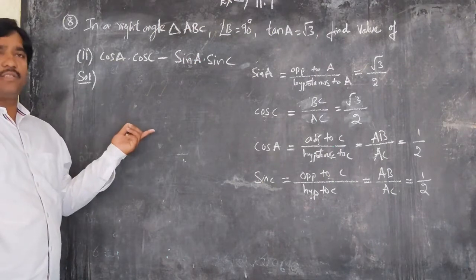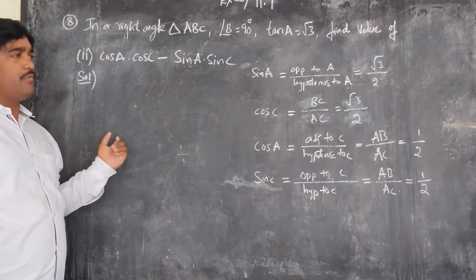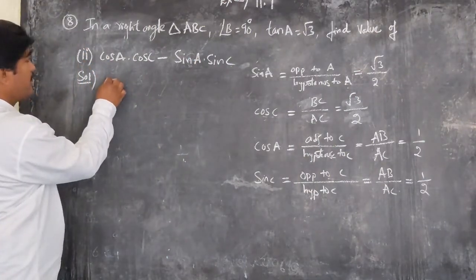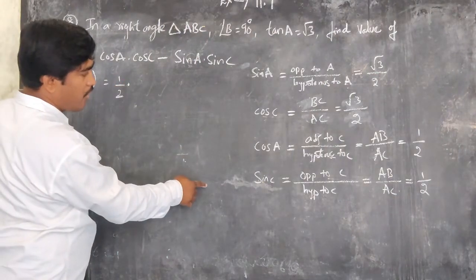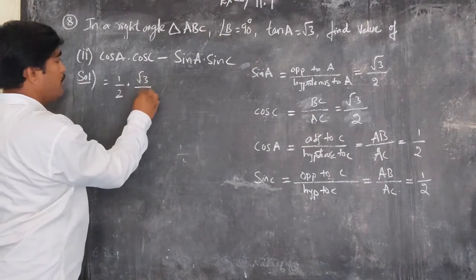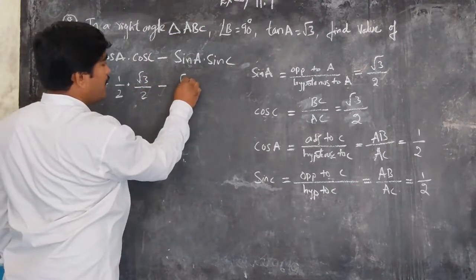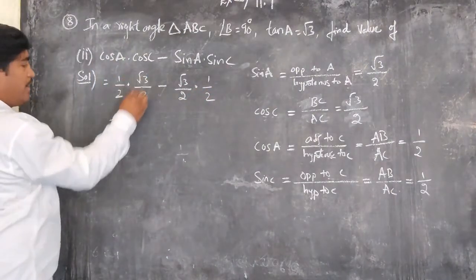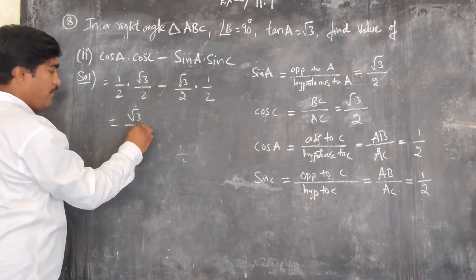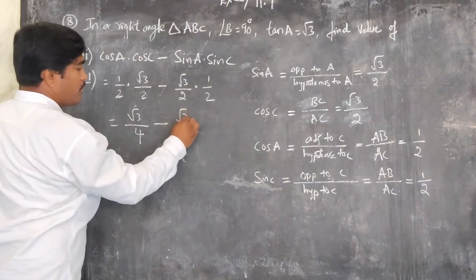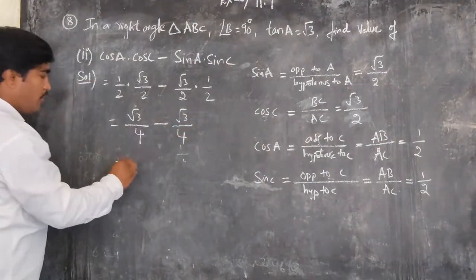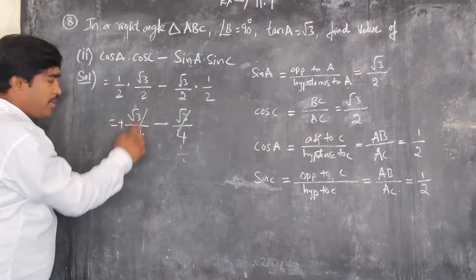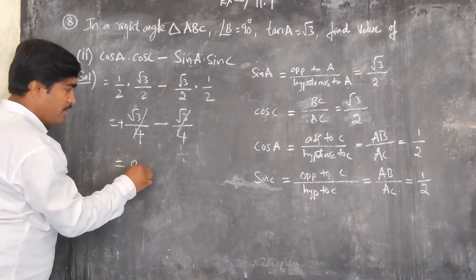For the second bit: cos A · cos C − sin A · sin C = (1/2)(√3/2) − (√3/2)(1/2) = √3/4 − √3/4 = 0.